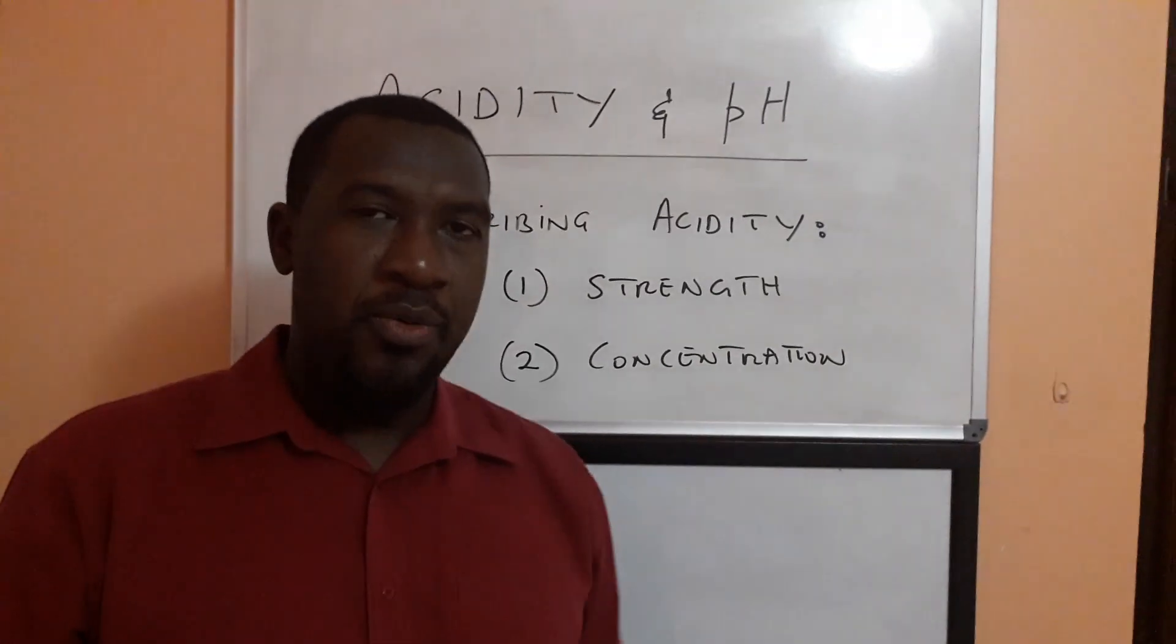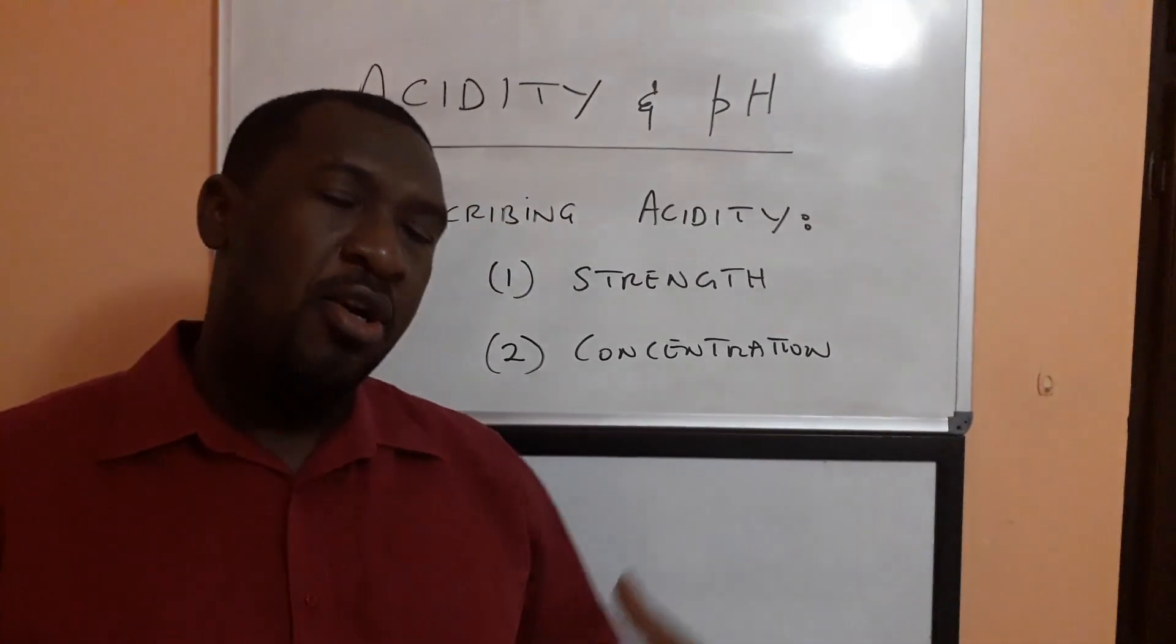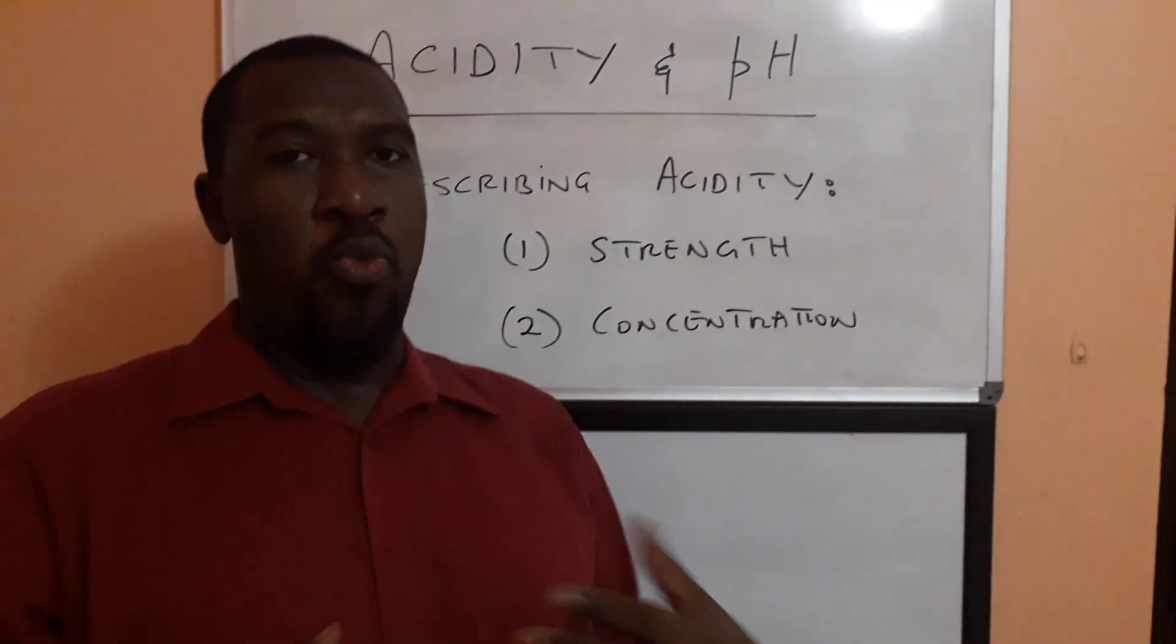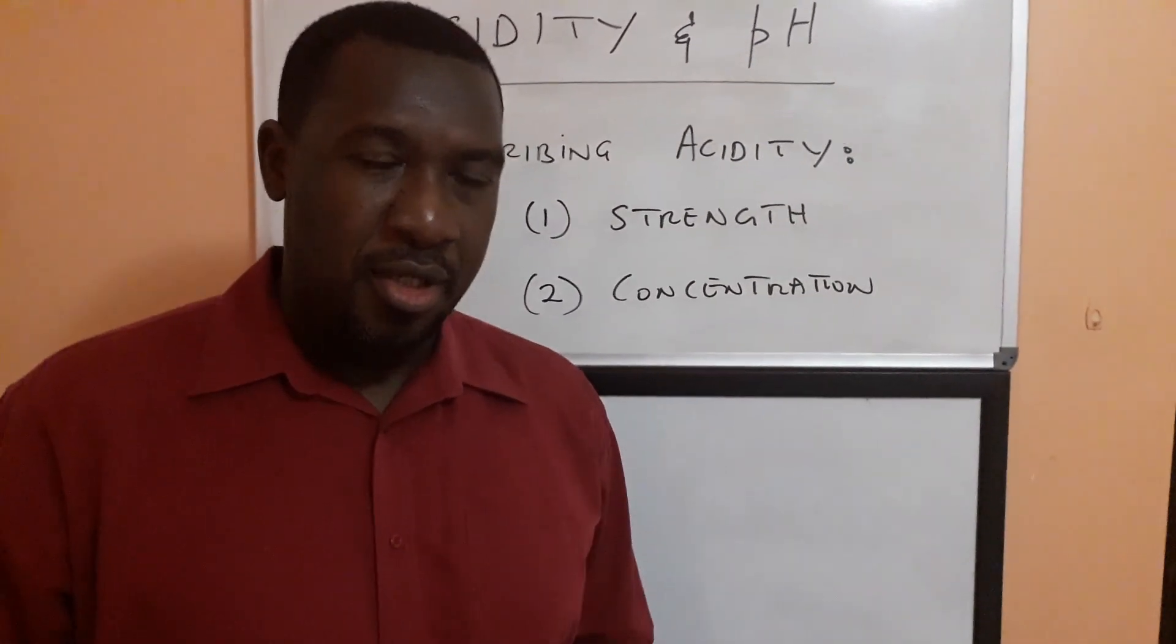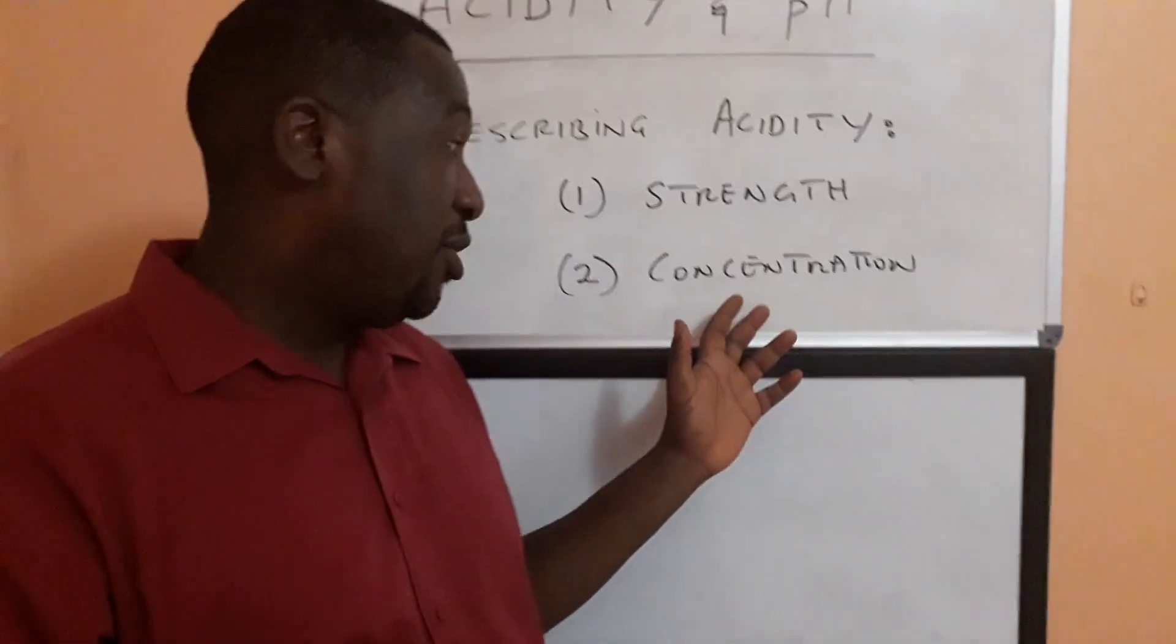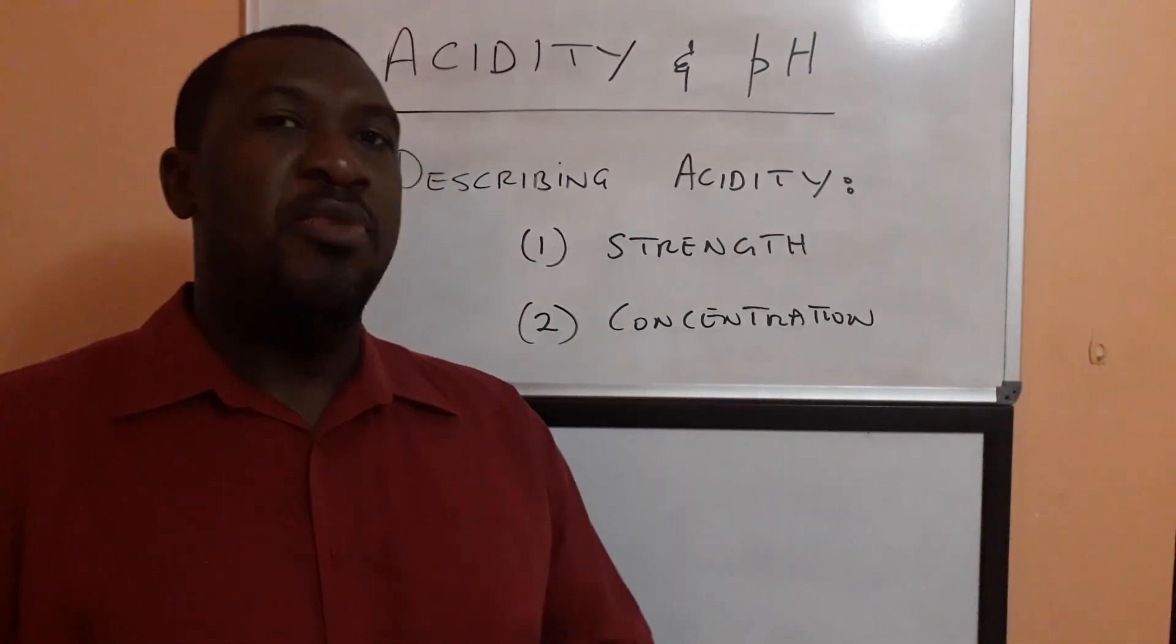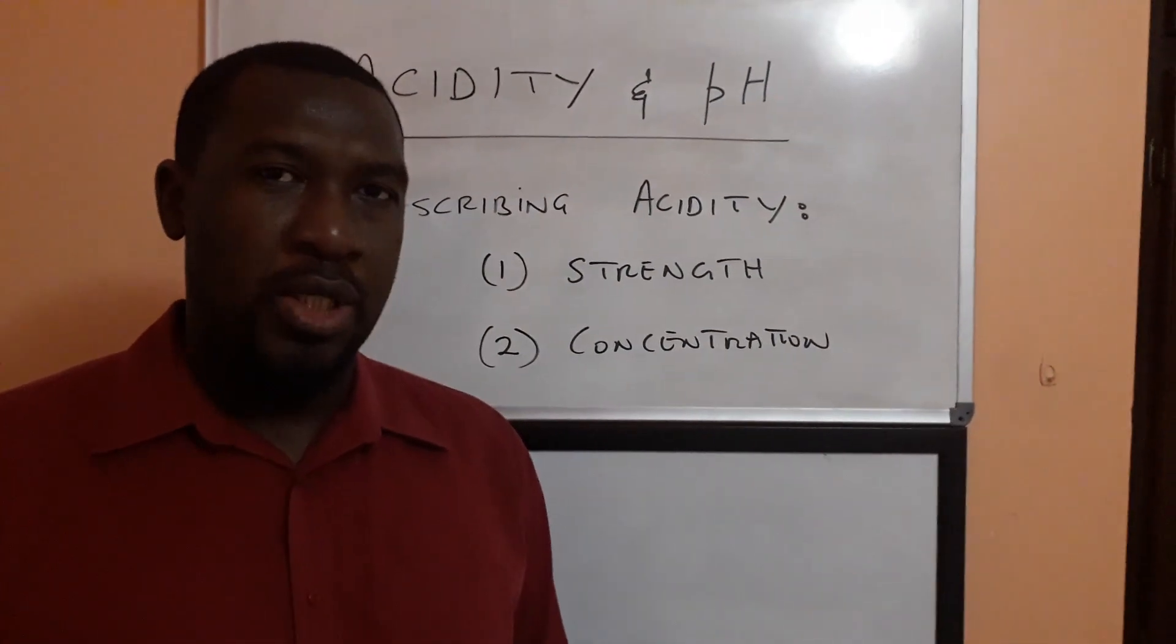Now there are different ways to describe acidity. One way is to describe it in terms of strength. So we might describe an acid as very strong or weak. Another way to describe acidity is using concentration. You see an acid might be concentrated or it might be diluted. But what do these two terms mean and how does that affect acidity? We're going to take a closer look.